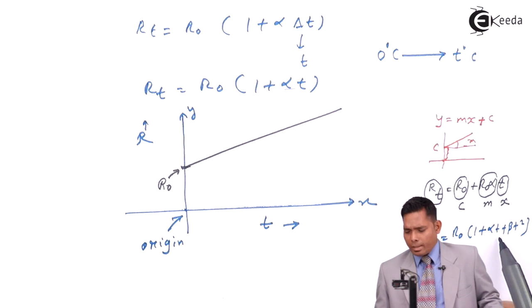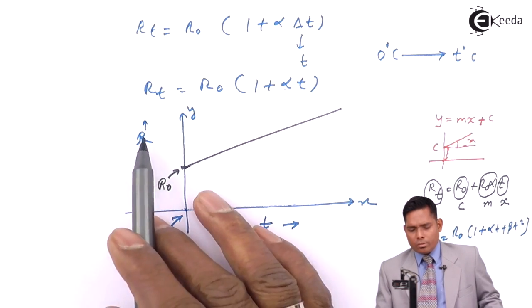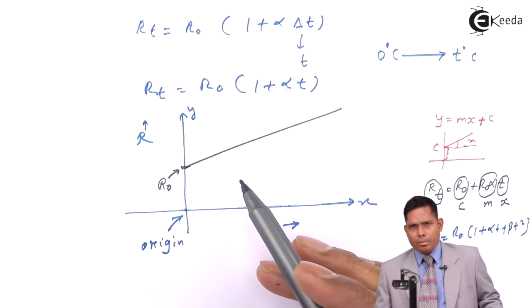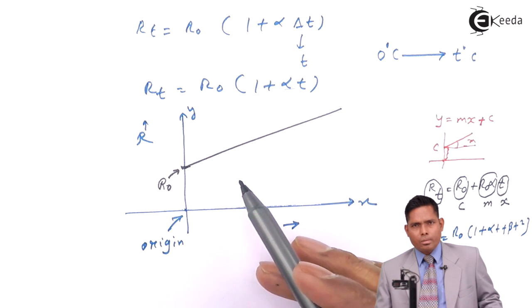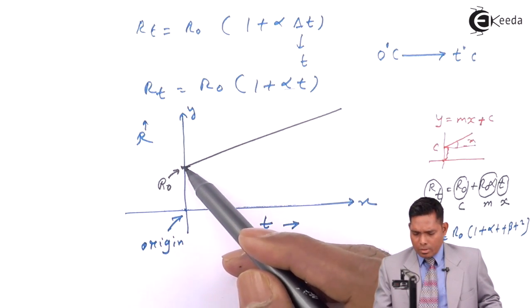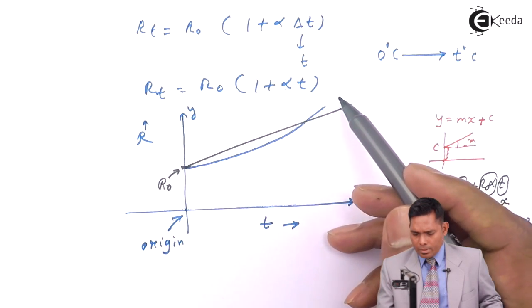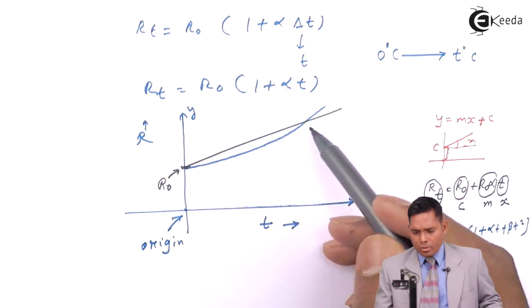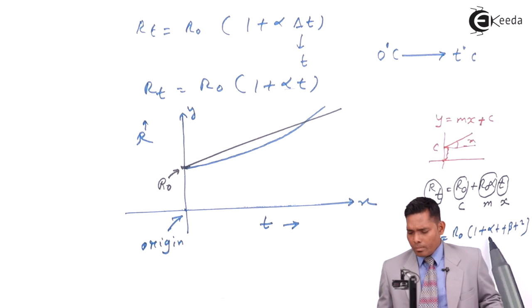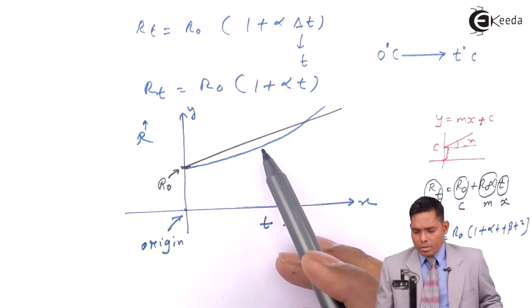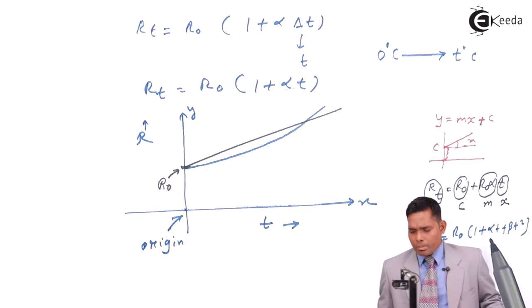If you get an entrance exam question about the variation of resistance with temperature, it is not a straight line. If you have the option 'parabola,' that will be correct. This equation — with the beta·T² term — is the equation of a parabola, not a straight line.